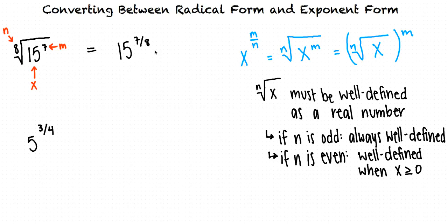Why don't you try to convert the next one to radical form? Well, I know we put the base, 5, underneath the radical. Then, looking at the conversion equation, we can write the denominator of the exponent, 4, with the radical on the outside to indicate we are taking the fourth root. And we can write the numerator of the original exponent, 3, as the exponent of the 5 underneath the radical. Great work! This equals the fourth root of 5 cubed.